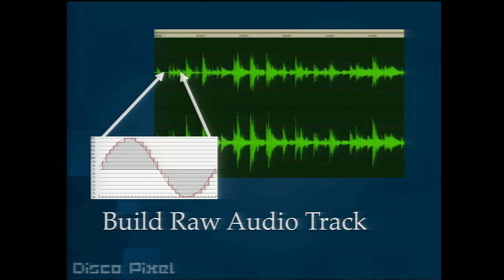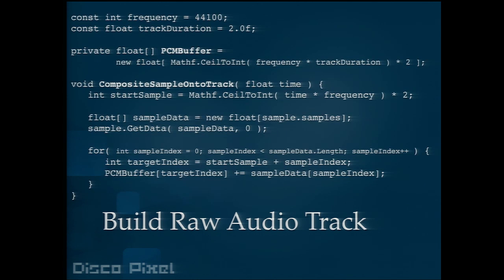Next up, I'm going to show some actual code of how to do this in Unity — I tried to simplify it as much as possible, and I've got handouts and a sample project online with the URL at the end. So first at the top, we actually create the buffer for the PCM data. PCM data is integer, but Unity exposes it to us as a float. So basically, we make a big array of floating-point numbers — that's what we're going to play.